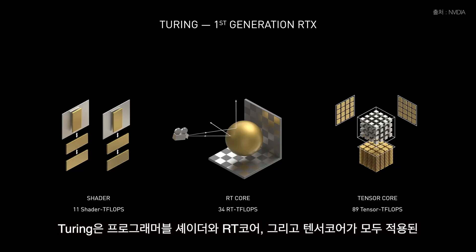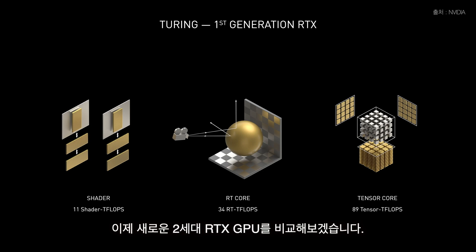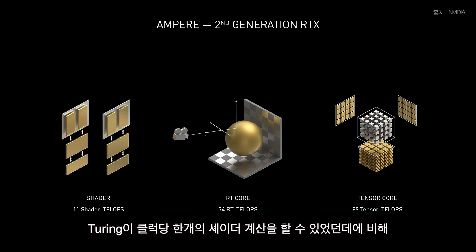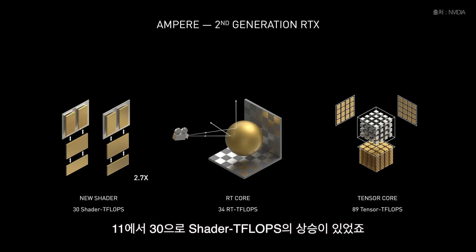Turing was our first generation RTX GPU, combining ray tracing, programmable shading, and AI. Let me show you our new RTX GPU. Ampere does 2 shader calculations per clock versus 1 on Turing — 30 shader teraflops compared to 11.